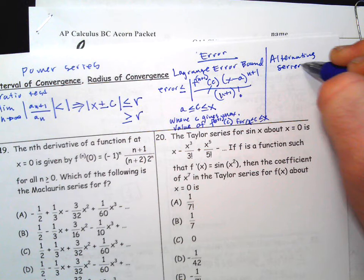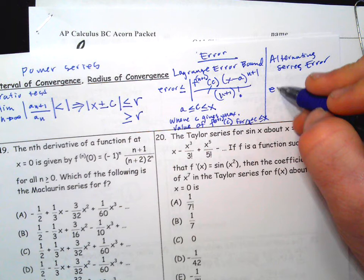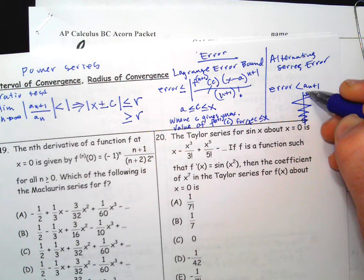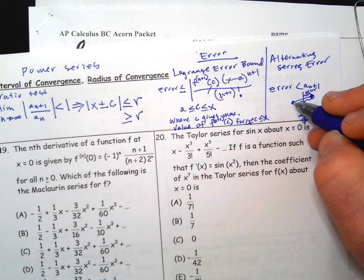The alternating series error bound says the error is just less than the absolute value of the next term. It's based on this idea: an alternating series goes back and forth converging, and the next term is definitely bigger than the actual error. So the error is always going to be less than that next term for an alternating series.